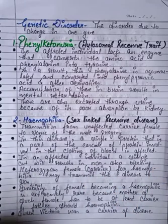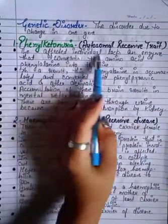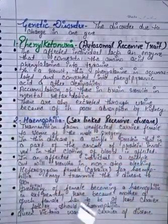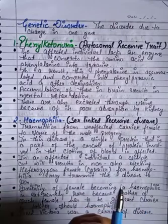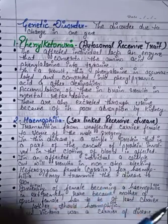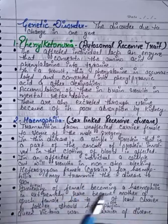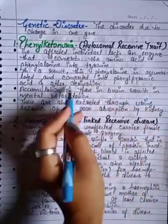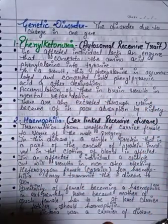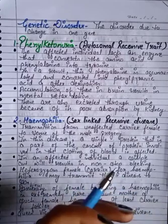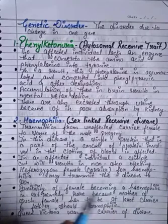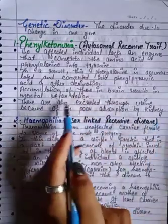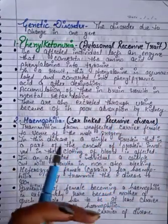In phenylketonuria, the affected individual lacks an enzyme that converts the amino acid phenylalanine into tyrosine. As a result, phenylalanine accumulates and is converted into phenylpyruvic acid and other derivatives. Accumulation of these in the brain results in mental retardation.